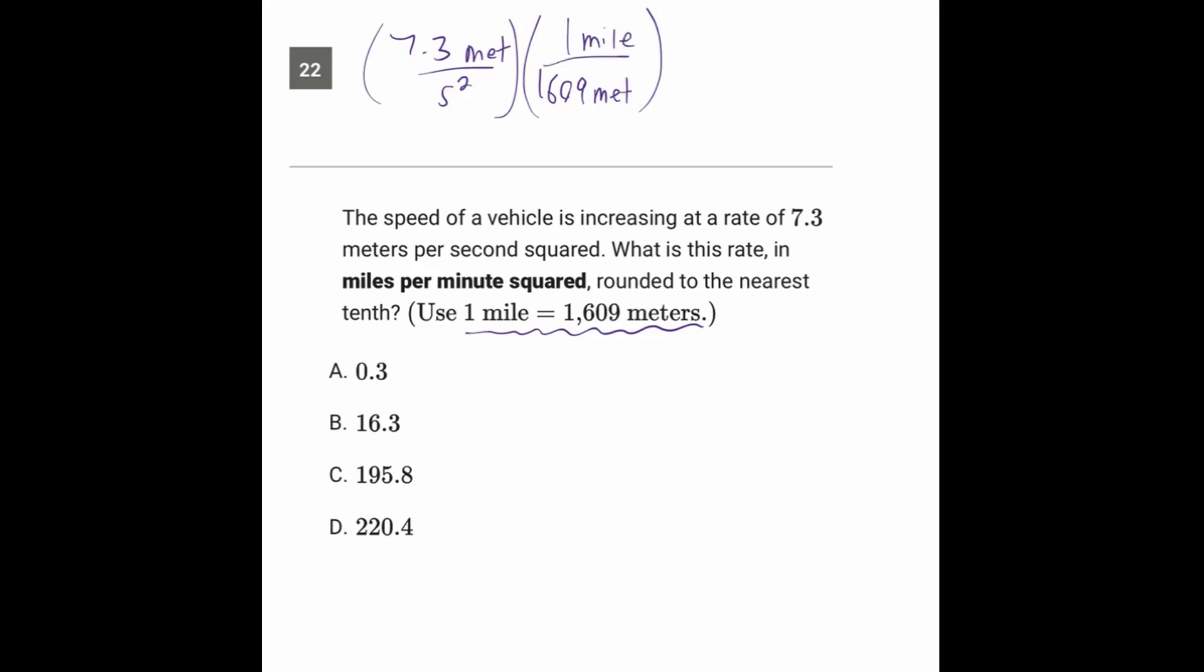This entire thing here, that's nothing more than the number one because it's got an equal numerator and denominator. Think of it like the fraction 5 over 5. We could have arranged that as 1 mile over 1,609 meters or 1,609 meters over 1 mile, and we're making the decision of how to put it here because we want the units to cancel. Here we have meters on the top, meters on the bottom, and they cancel.